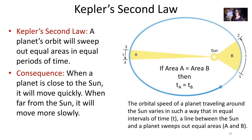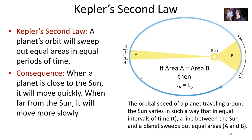Now we move on to Kepler's second law. Kepler's second law says that a planet's orbit will sweep out equal areas in equal periods of time. Here in this image, I have an orbit of a planet around the sun — an elliptical orbit — so the sun is at one of the two foci of this ellipse.